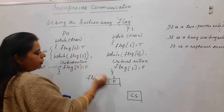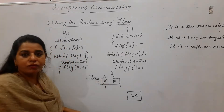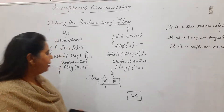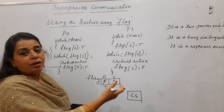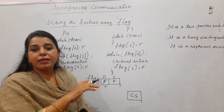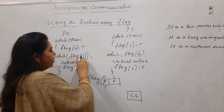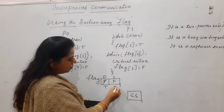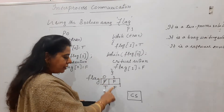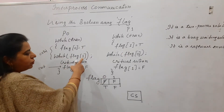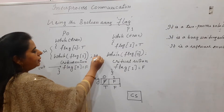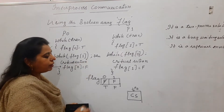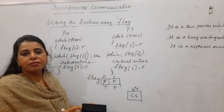Process P0 will set flag[0] to T — initially it was F. T indicates that P0 is saying 'I am interested to enter the critical section.' Then it checks whether the other process is also inside the critical section by evaluating the while loop: 'while flag[1] is true.' Flag[1] is false here — P1 has not attempted to enter — so the while condition is false and P0 can enter the critical section. Now make a context switch.